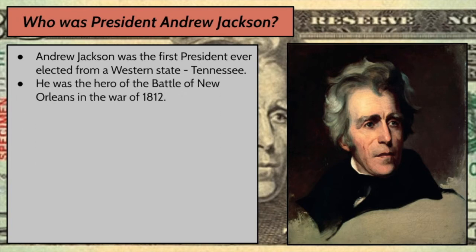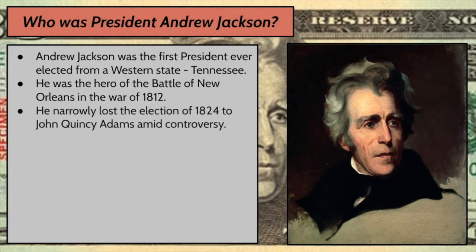He was a hero of the Battle of New Orleans and the War of 1812. We did not cover the War of 1812 in class since we are a one-semester course, but the very last battle of the War of 1812 was the Battle of New Orleans. Andrew Jackson was a conquering hero in that battle, which is what he was known for and why he was popular. He narrowly lost the election of 1824 to John Quincy Adams amid a great deal of controversy, and four years later, Andrew Jackson was extremely angry and ran again.